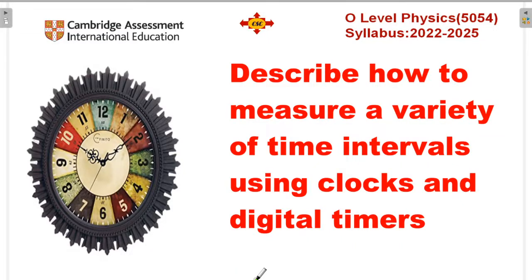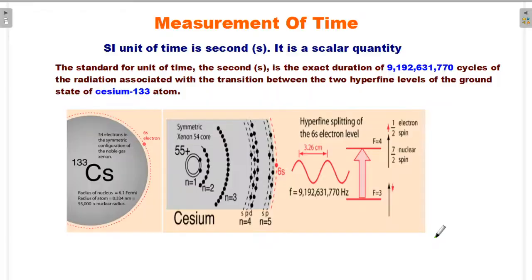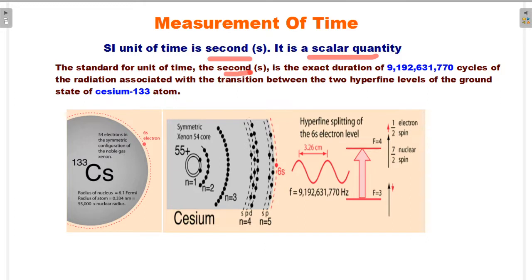Hi everyone, welcome to my YouTube channel College of Science Culture. Today our topic is: describe how to measure a variety of time intervals using clocks and digital timers. The unit of time is seconds. It is a scalar quantity because time has no direction, only magnitude.